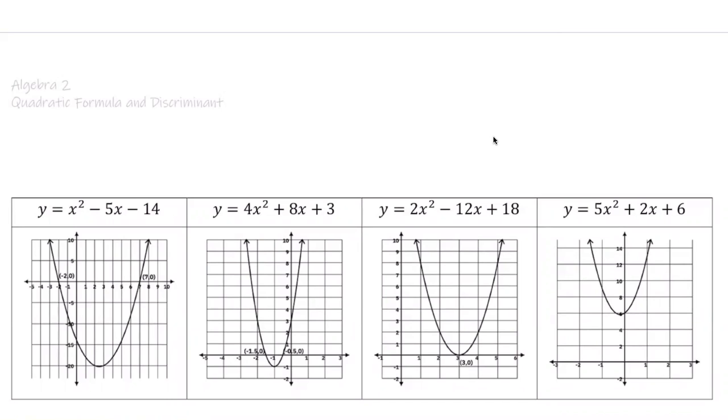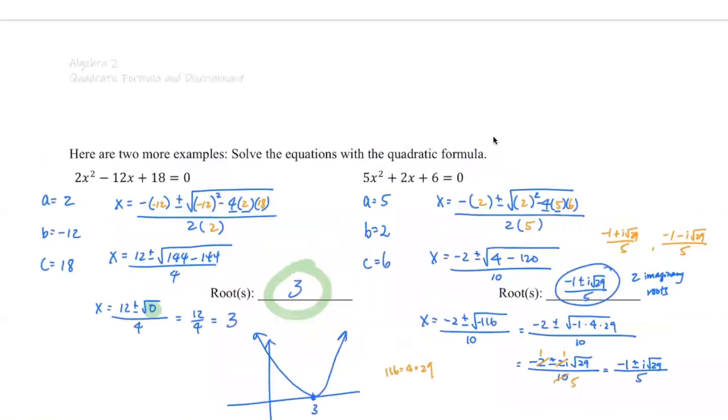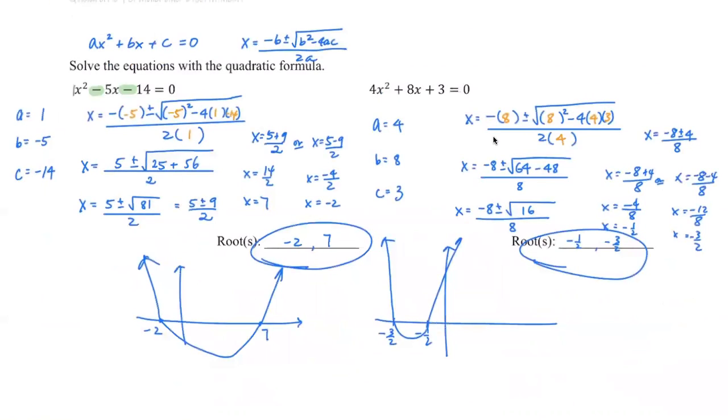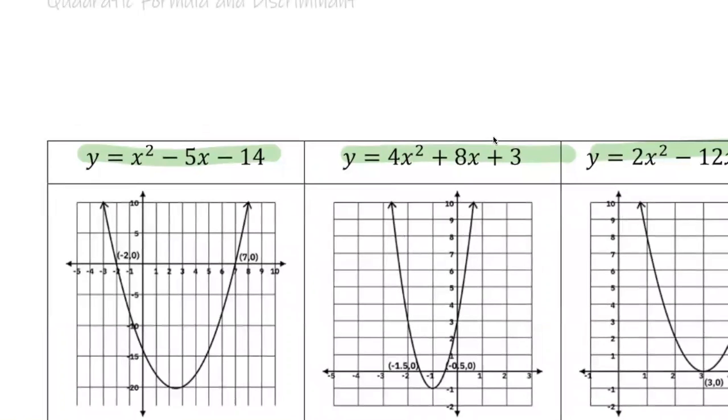So now if you are a very careful observer, you will find out that the equations I listed right here are slightly different than the ones from the previous examples. Now for the examples, they were all equal to zero, but here it's not equal to zero, it's just y, all right?